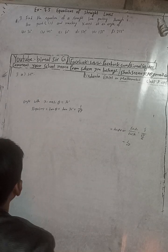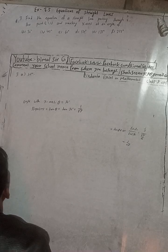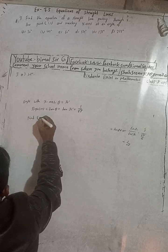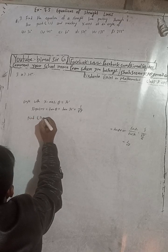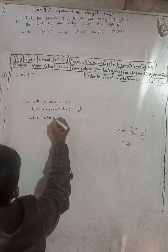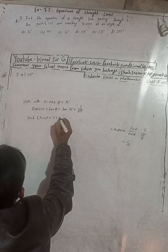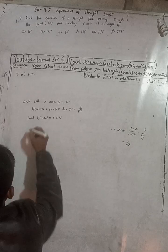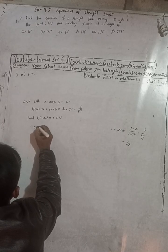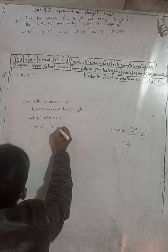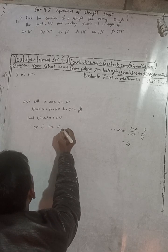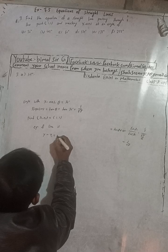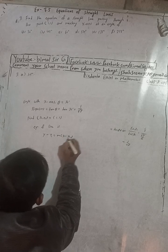Now the point is (1, 1), so x1, y1 equals 1, 1. Therefore the equation of the line using the slope-point form is: y minus y1 equals m into x minus x1.